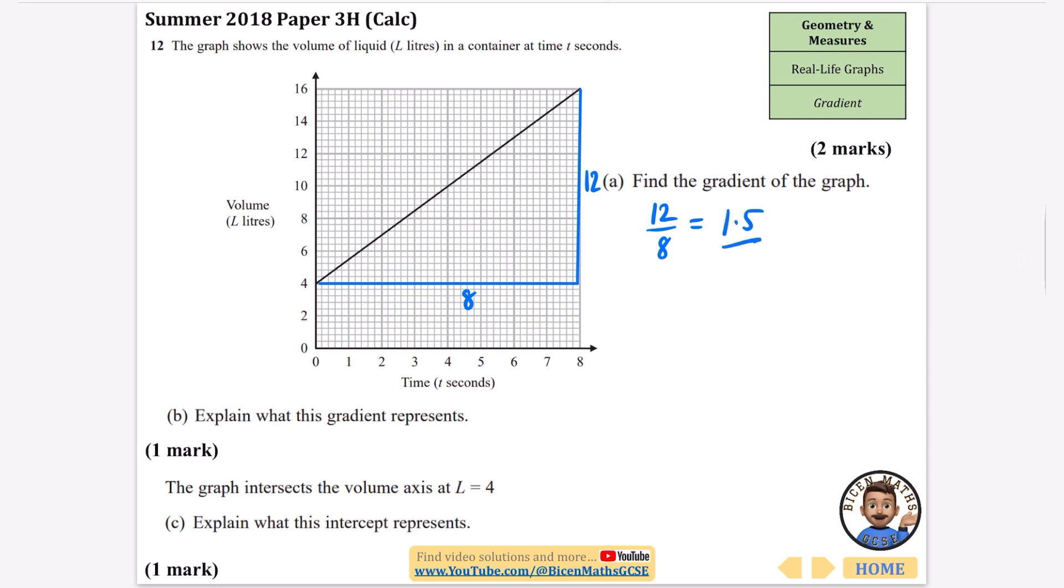It says explain what this gradient represents. It's the volume of liquid in a container, so it's this thing divided by this thing. It's how the volume is changing with respect to time. The gradient represents the rate of increase of the volume, or you could say it's the liters per second. The graph intersects the volume at L equals 4. Explain what this intercept represents. When the time is zero, the volume is 4. It's the initial volume, meaning the starting volume in the container.